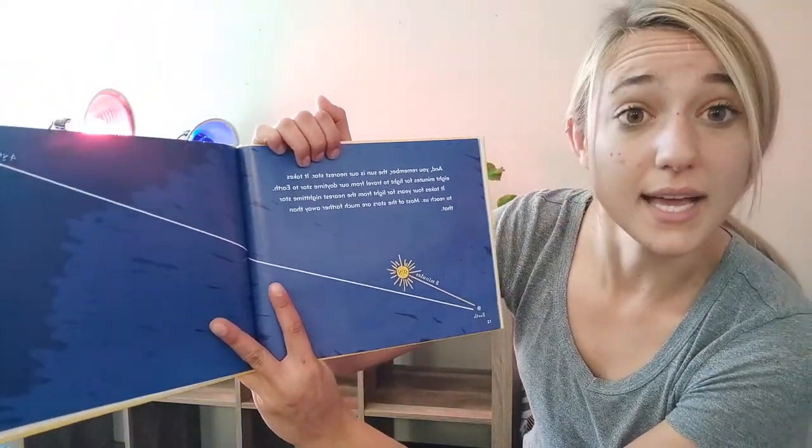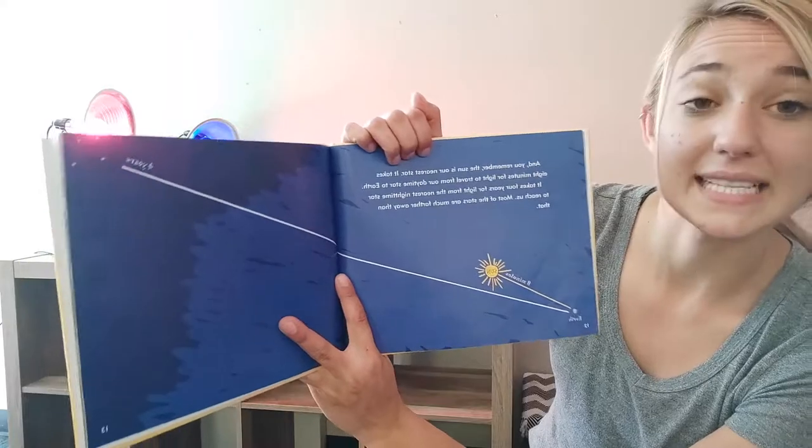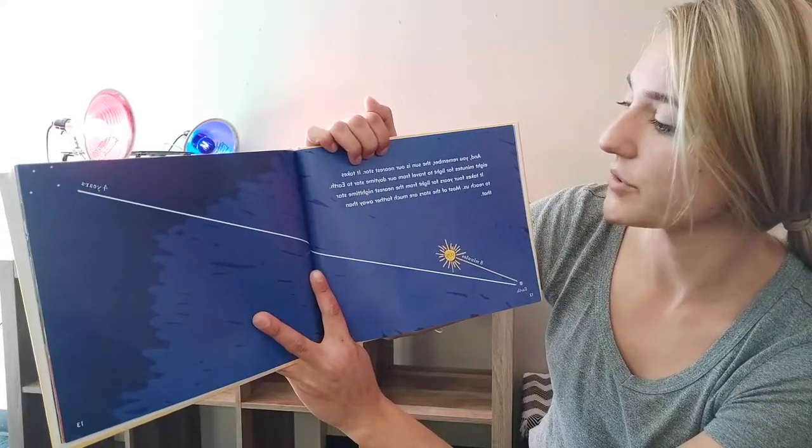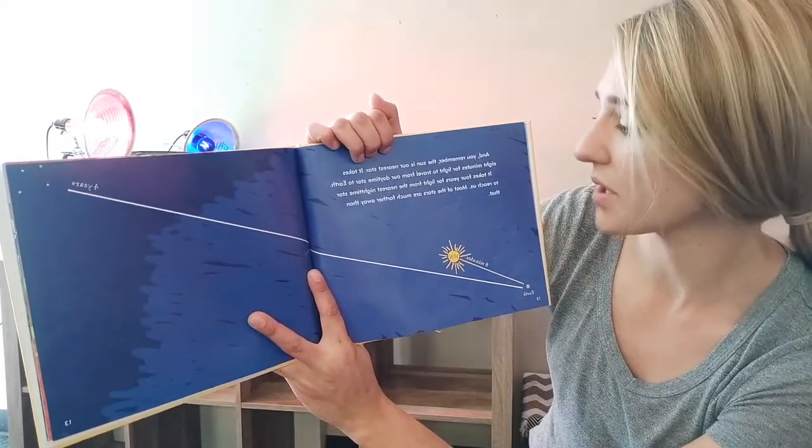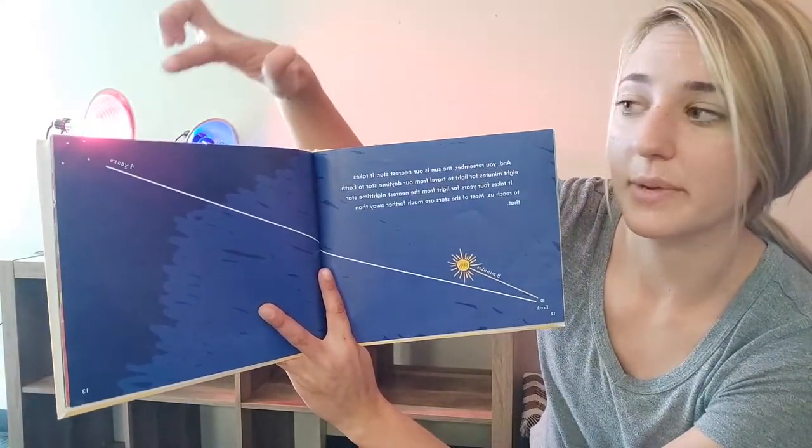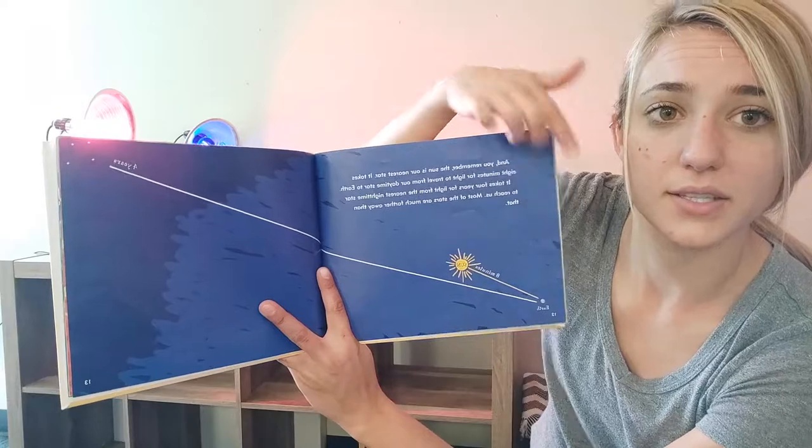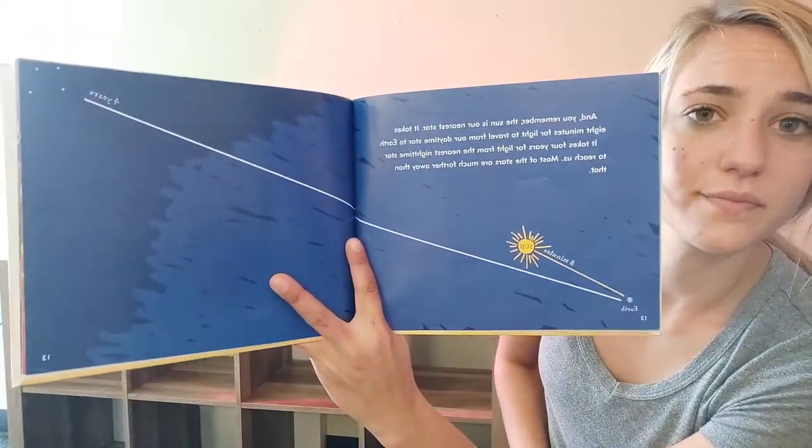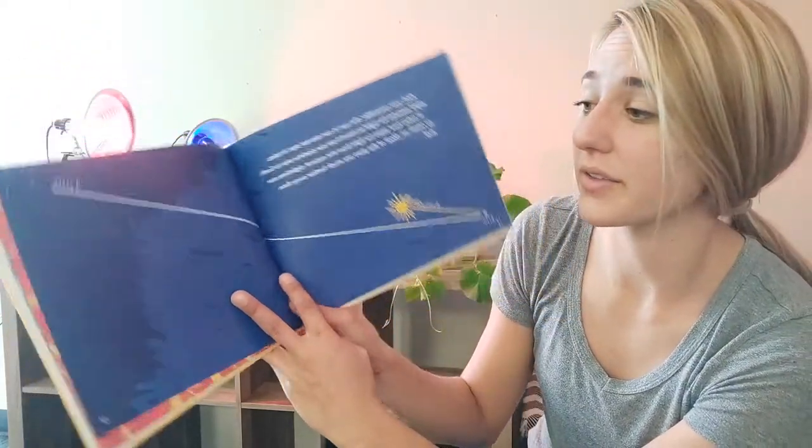And you remember the sun is our nearest star. It takes eight minutes for light to travel from our daytime star to earth. It takes almost four years for light to travel from our nighttime stars all the way to earth. So that's how far away all the other stars are.